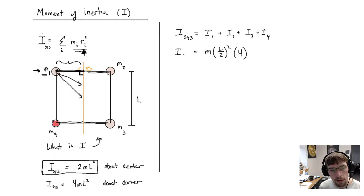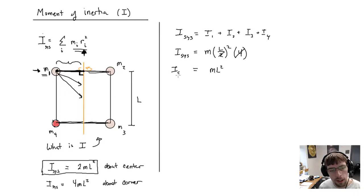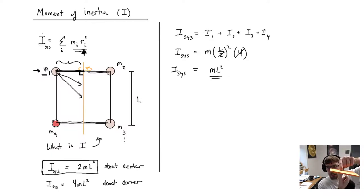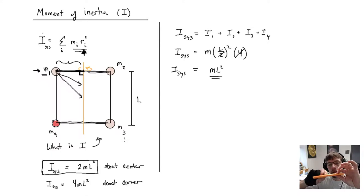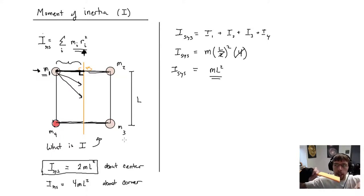So I end up with 4 × m(L/2)² = 4 × mL²/4 = mL². The moment of inertia for this rotation is mL². Comparing all three cases: rotation about an axis in the plane gives mL², about the center gives 2mL², and about one corner gives 4mL². The easiest rotation is in the plane, then about the center, and the hardest is about a corner.